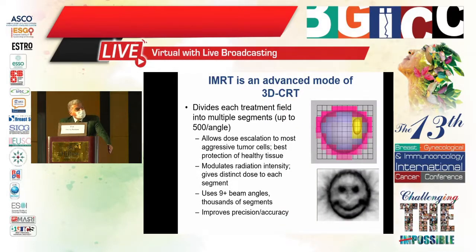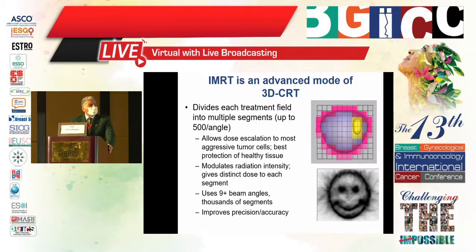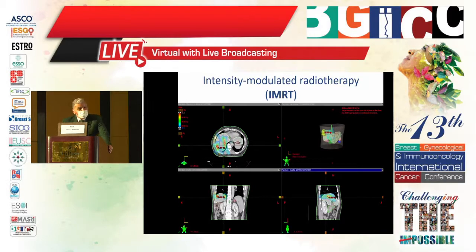This is an IMRT plan. It is an advanced mode of 3D conformal therapy. It divides each treatment field into multiple segments — up to 500 segments per angle — allowing dose escalation to the most aggressive tumor cells and best protection of healthy tissue. It modulates radiation, giving a distinct dose to each segment, uses 9 or more beam angles and thousands of segments, improving precision and accuracy. I would like to demonstrate the capabilities and power of precision of IMRT.